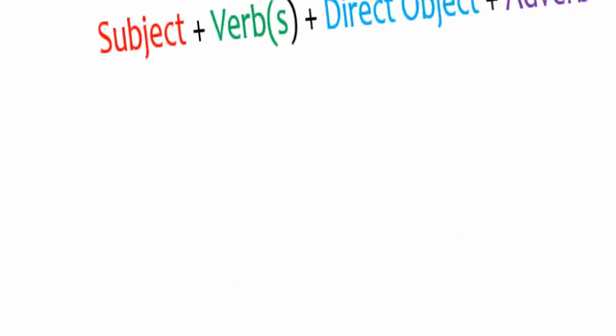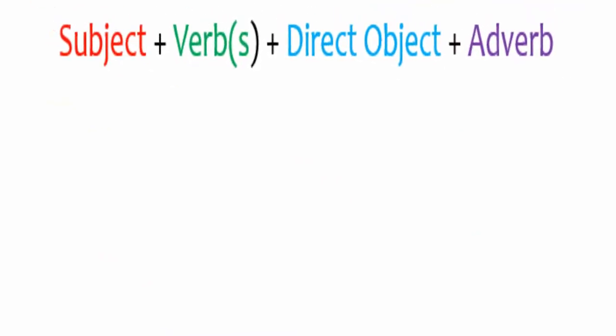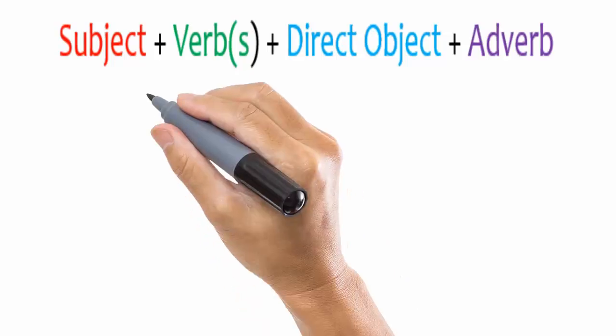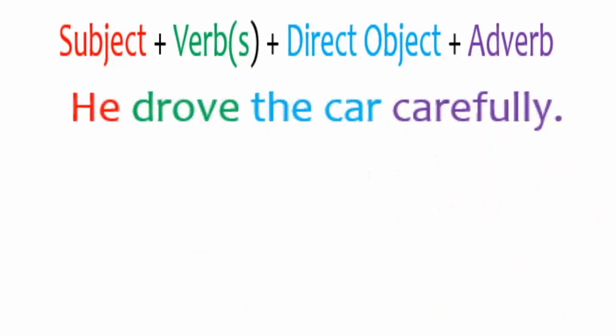Adverb of manner is placed after the direct object. So the order becomes subject, verb, direct object, and then adverb. For example: he drove the car carefully.